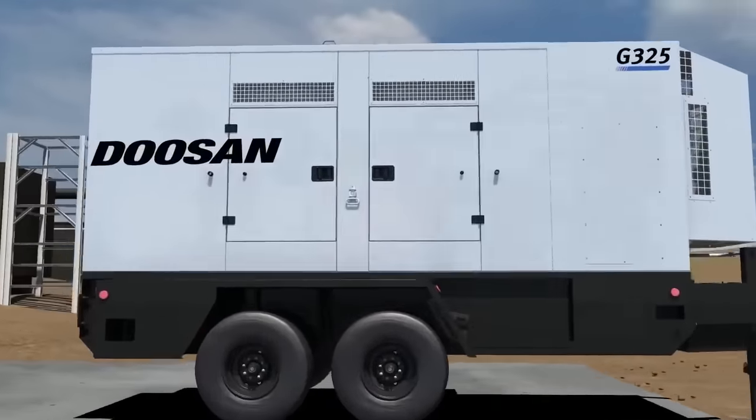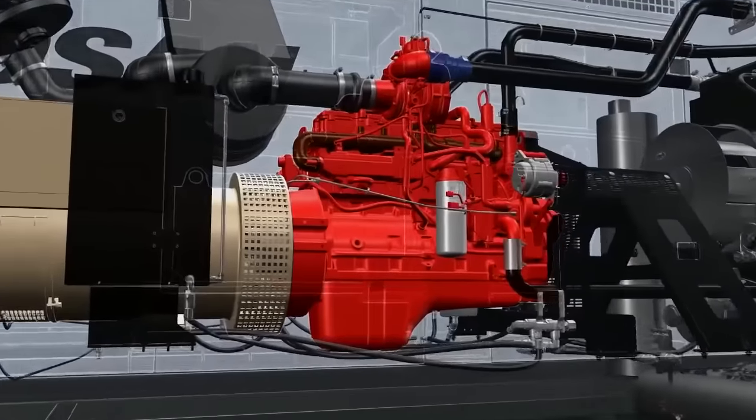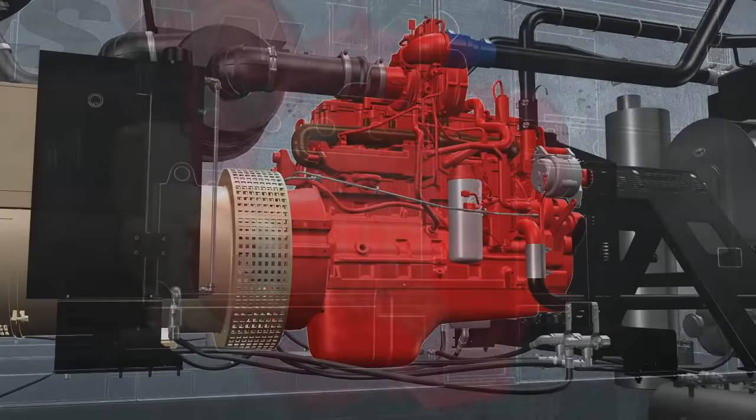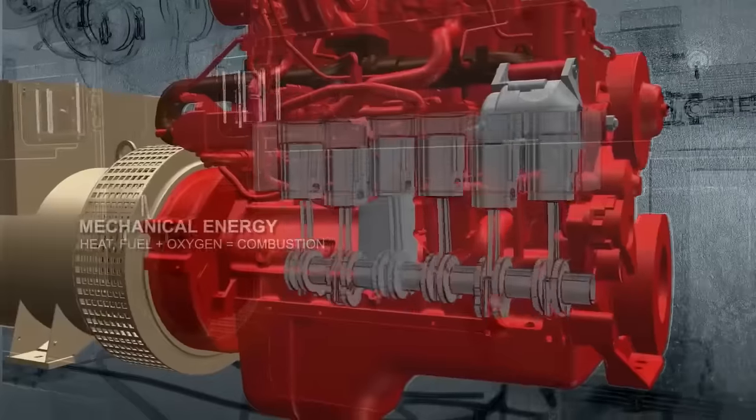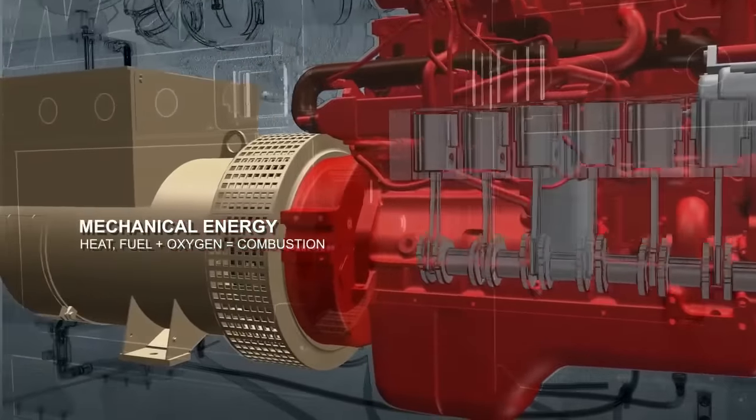A generator engine converts diesel fuel to mechanical energy that rotates the crankshaft. As combustion occurs in each cylinder, energy transmits to the engine crankshaft which generates mechanical power for the alternator.